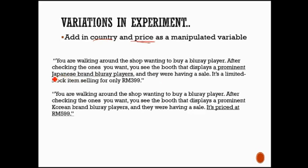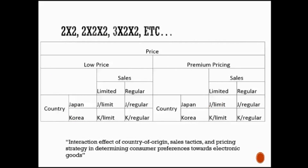So you have Japanese and Korean, right, you have limited stock or regular price, but then you can also calculate whether it's $3.99 or $5.99. Okay, so this is already three independent variables, and how many versions of the questionnaire you need, you need one, two, three, four, five, six, seven, eight, right.